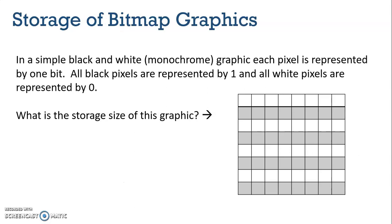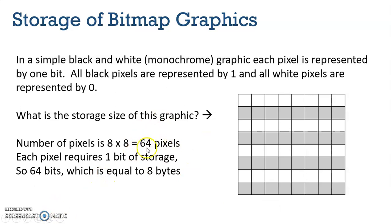When storing bitmap graphics, in a simple black and white — also called monochrome — graphic, monochrome just means there are only two colors. In a simple monochrome graphic, each pixel is represented by one bit. All black pixels are represented by one and all white pixels by zero. So if I was to ask what is the storage size of this graphic here on the right, simply count all of the pixels along the top and along the side. We have eight along the top and eight along the side, giving us 64 pixels. Each pixel requires one bit of storage, so 64 pixels gives us 64 bits, which is also equal to eight bytes, because there are eight bits in a byte.